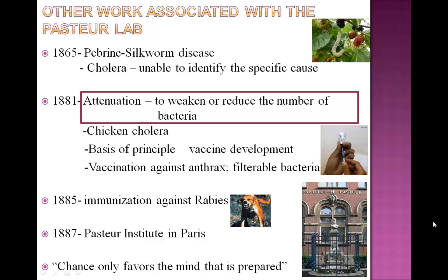Apart from his contributions to fermentation and pasteurization, Pasteur's lab worked on several diseases and on the principles of vaccination. In 1865, a disease known as pebrine was killing a great number of silkworms. Pasteur worked several years to show that the disease is caused by a microbe that attacked the silkworms in the egg stage, thus demonstrating that eliminating the microbe would eliminate the disease.